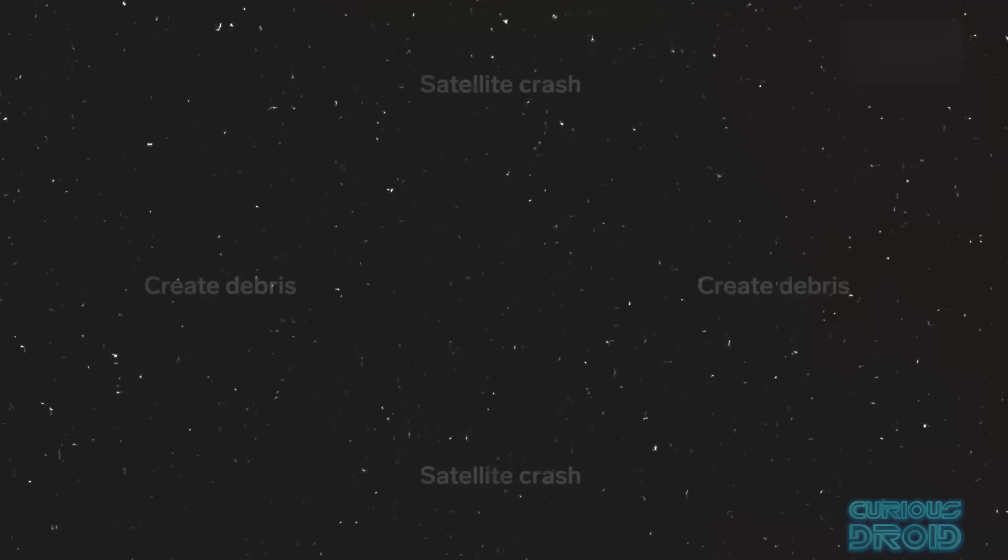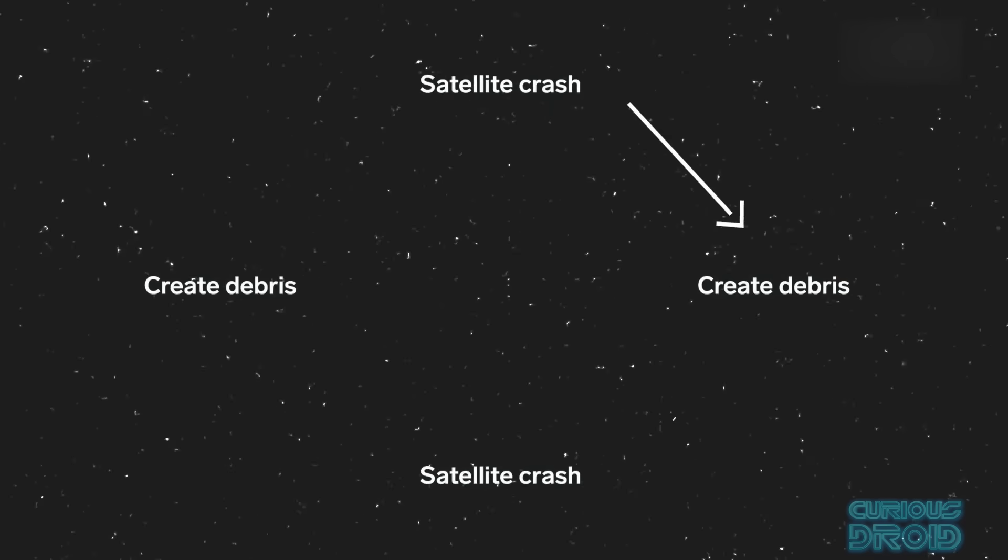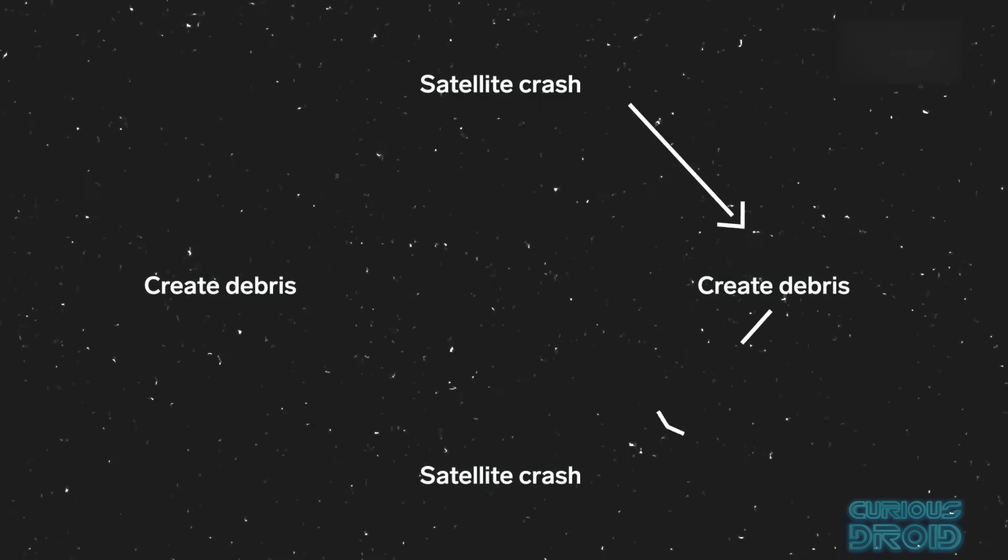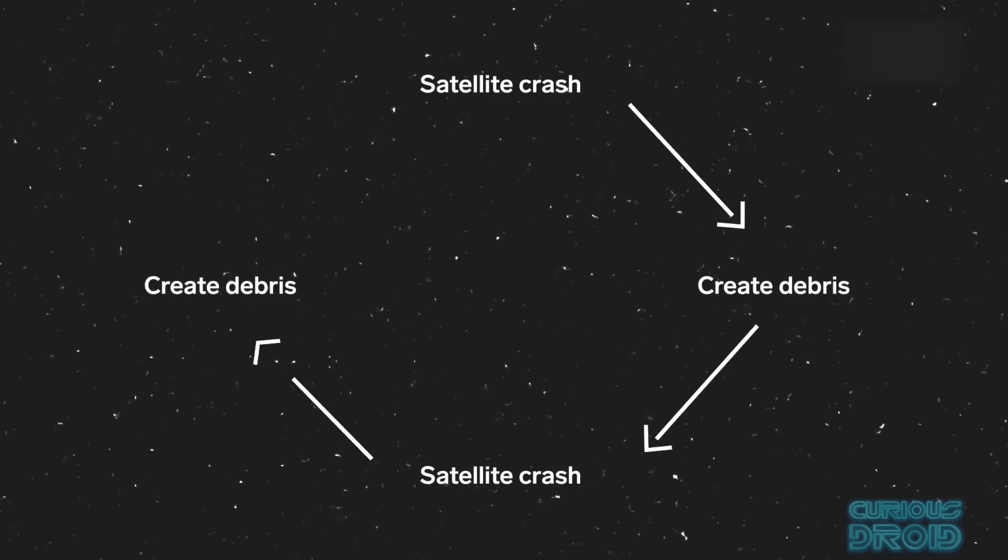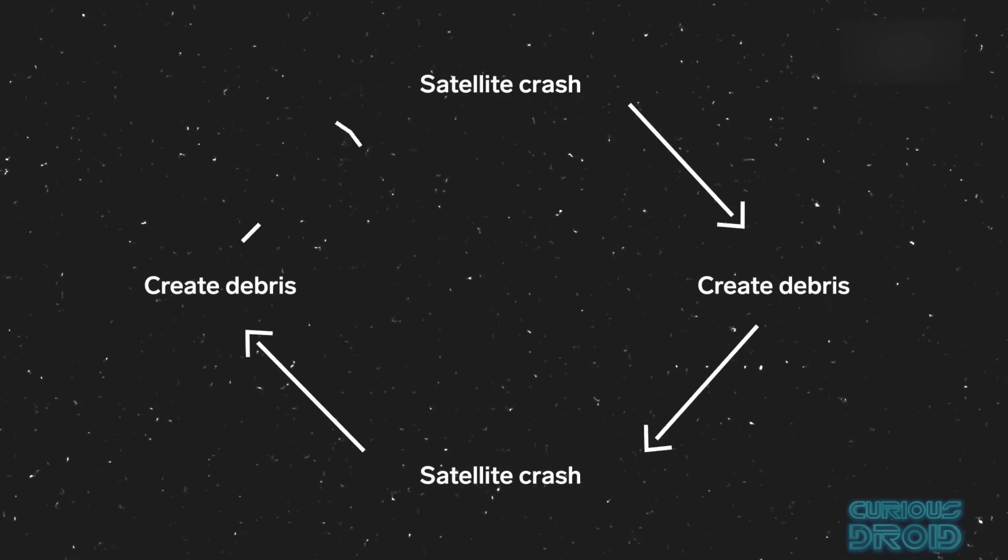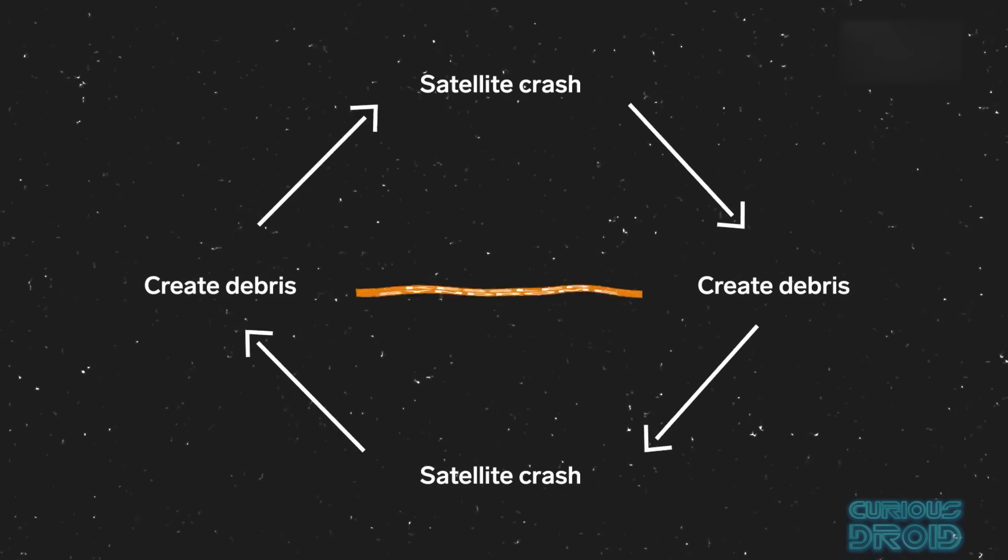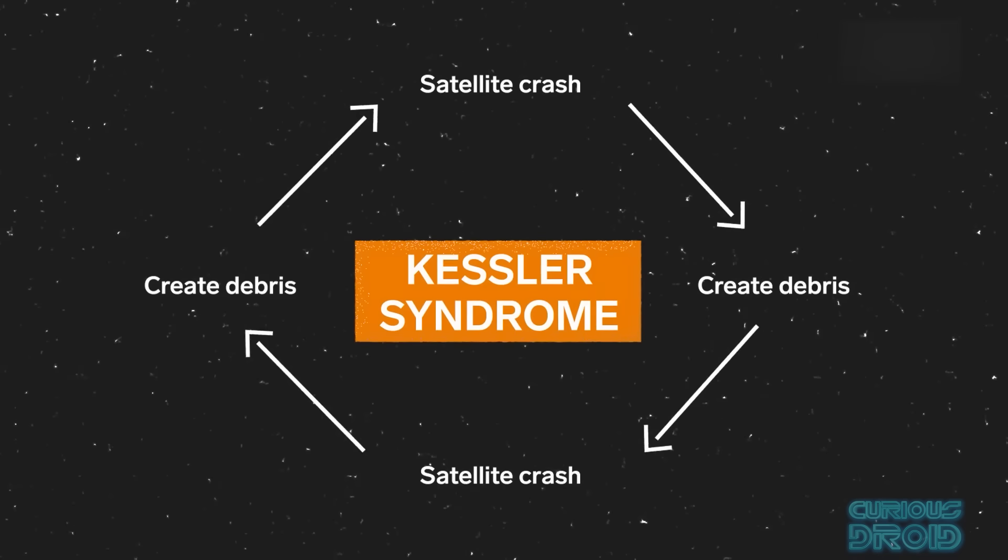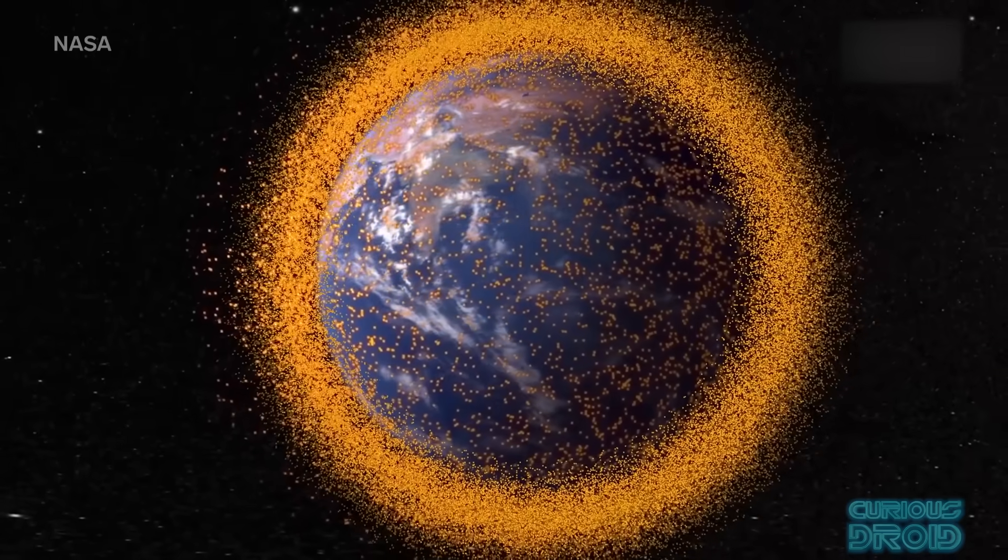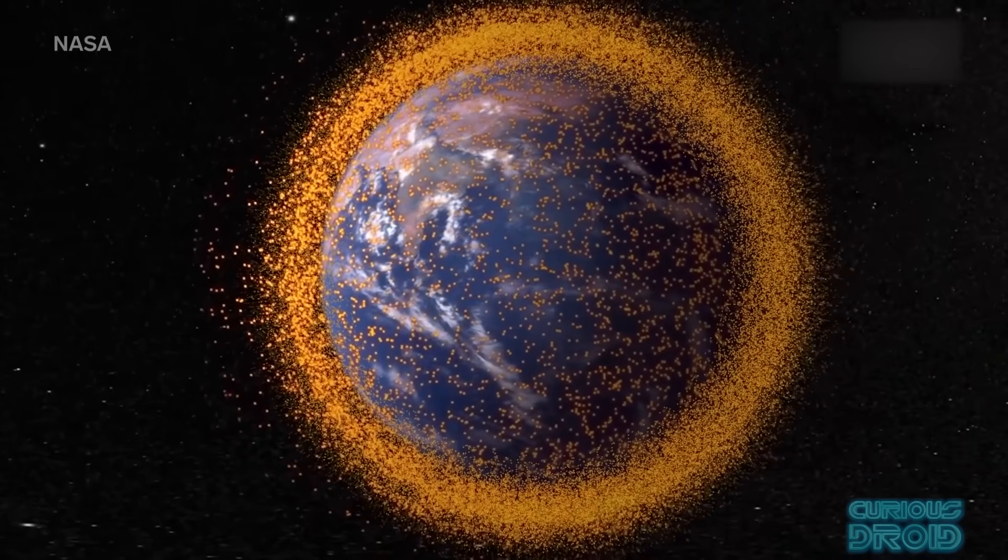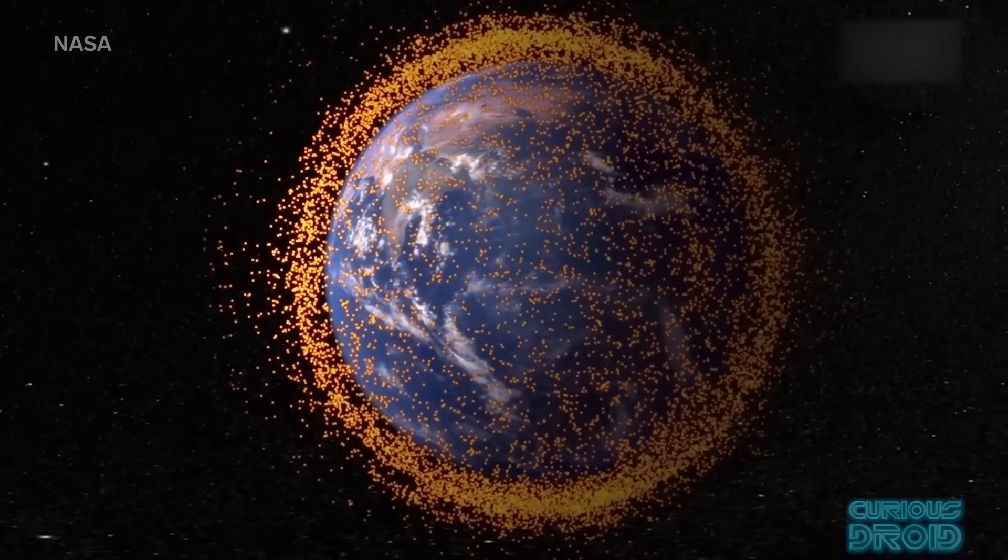This is where the debris from a single collision could, in theory, collide into other satellites, which in turn collide into more satellites and so on, creating a self-sustaining chain reaction of collisions and fragmentation until there is so much debris that even space launches and things like space stations are at risk of damage or destruction. This could make certain orbital regions unusable, possibly for hundreds of years, until they are gradually cleared out by the atmospheric drag.